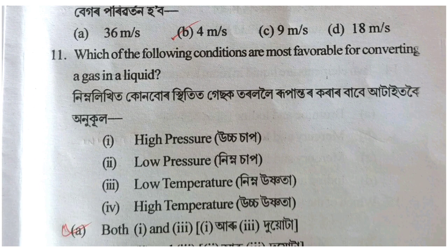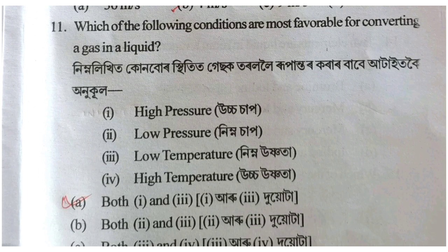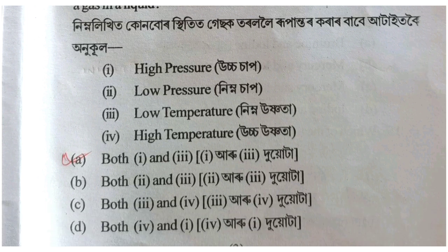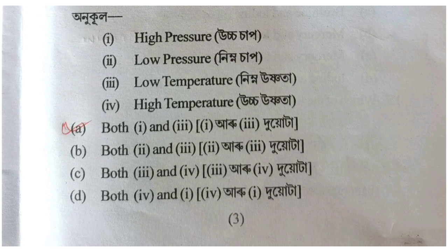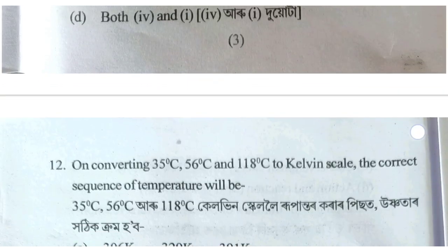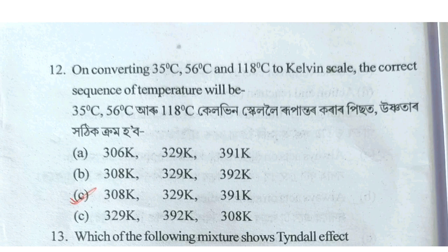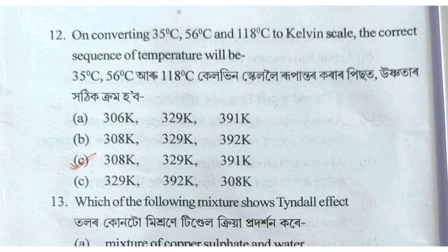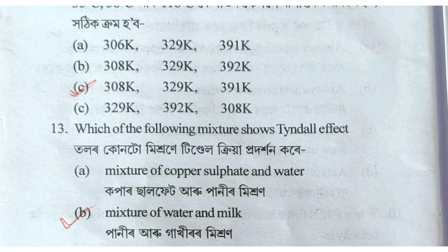The next question concerns a gas tank at high pressure and low temperature. On converting 35 degrees Celsius, 56 degrees Celsius, and 118 degrees Celsius to the Kelvin scale, the correct sequence of temperatures will be 308, 329, and 391 Kelvin.